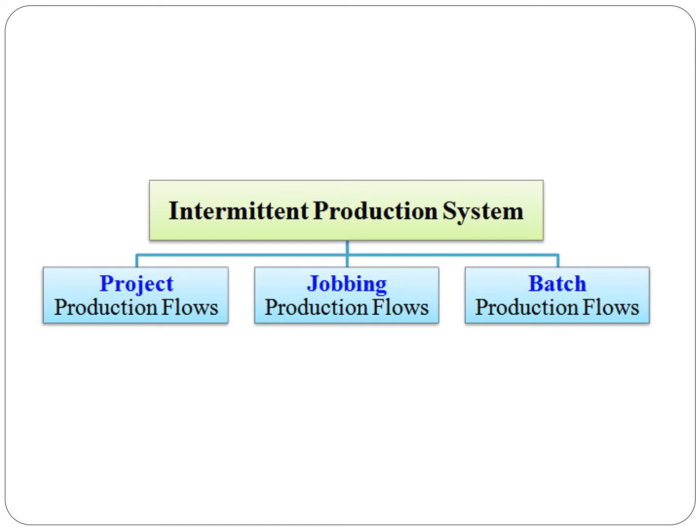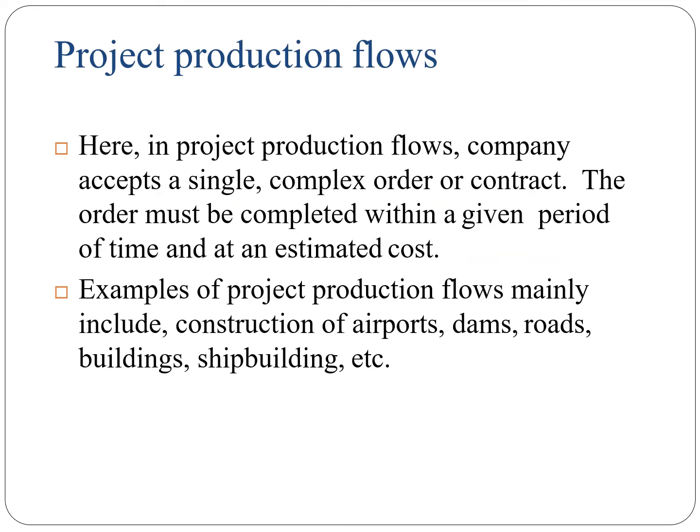The types of intermittent production system are project, jobbing, and batch. In project production, the company accepts a single complex order or contract. The order must be completed within a given period of time at an estimated cost. Examples of project production include construction of airports, dams, roads, buildings, shipbuilding, etc.